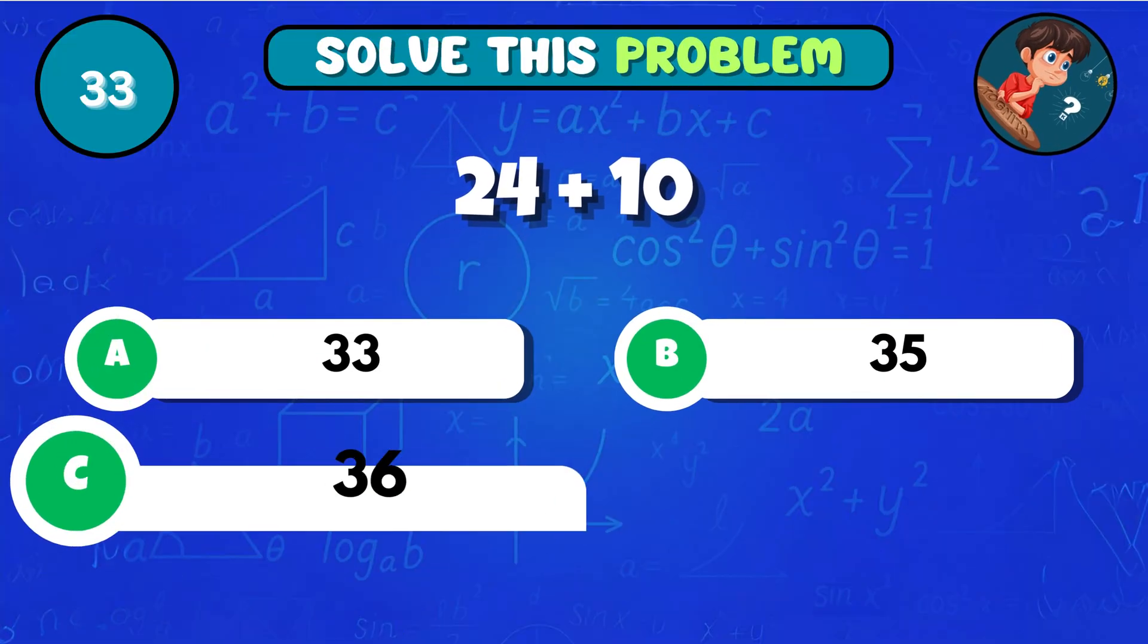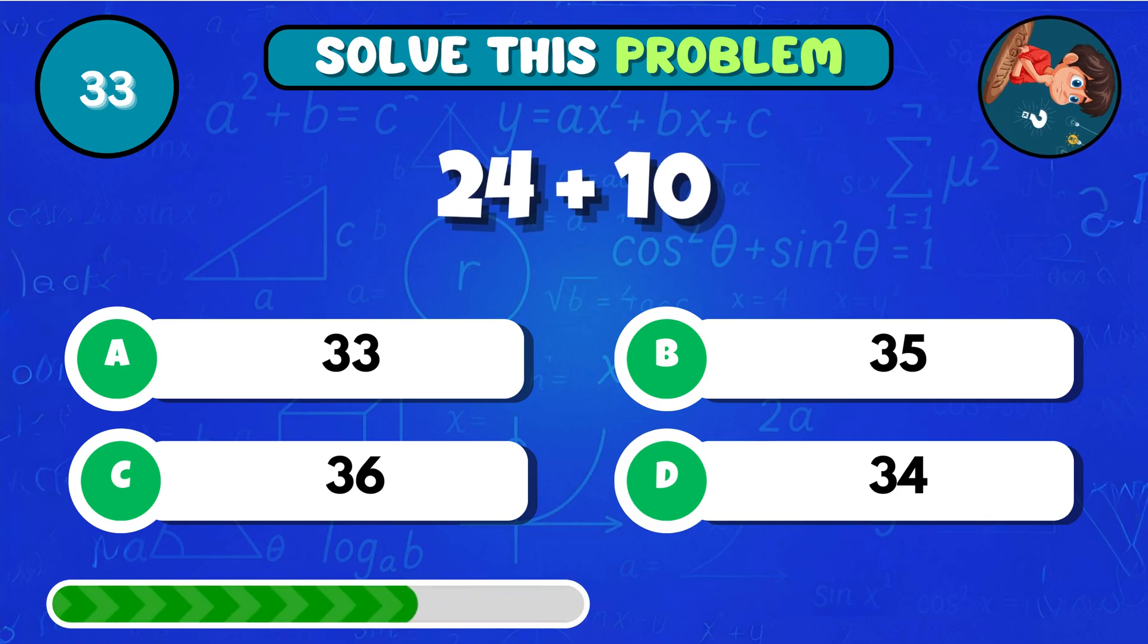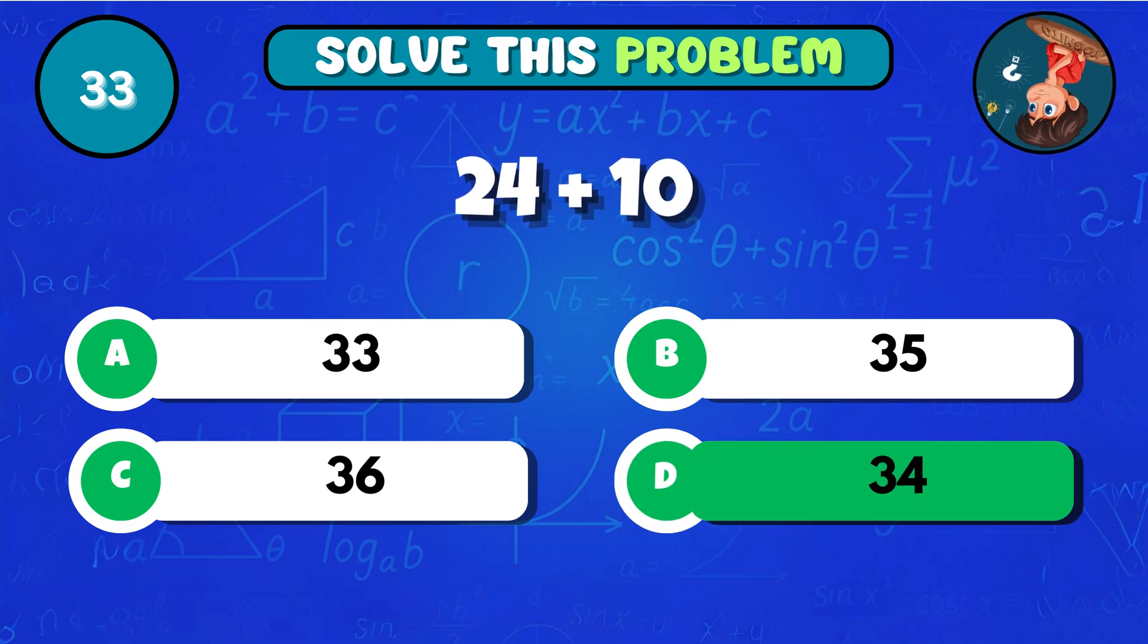Add 24 and 10 together, what's the total? The total is D 34!